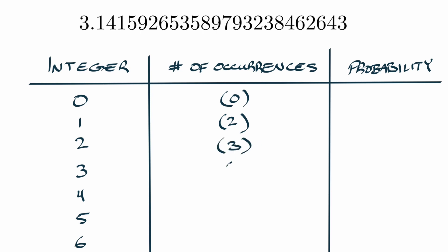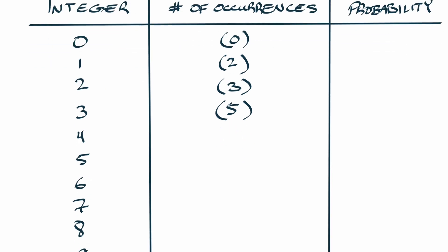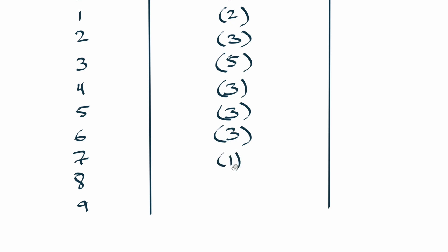Five instances of three, and then we have for four, five and six, three instances each. And then for seven, eight, nine we have one, two, and three instances respectively.